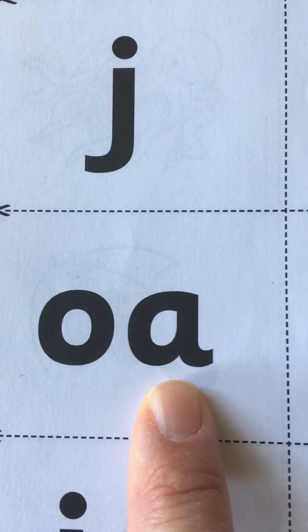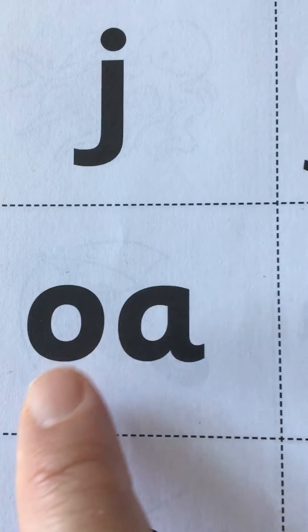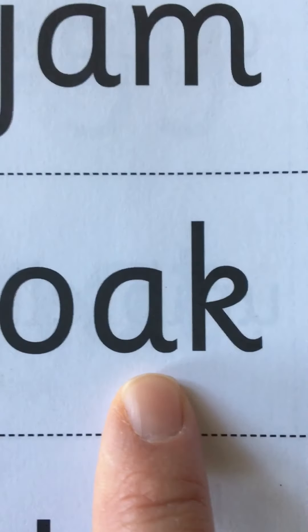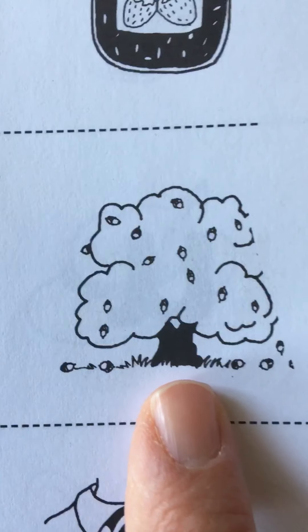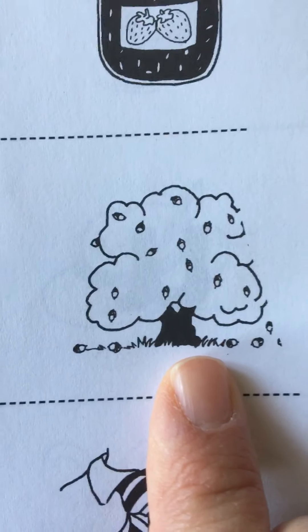OA, the sound is O, O, A, OA, oak, oak. And then we have an oak tree, oak tree.